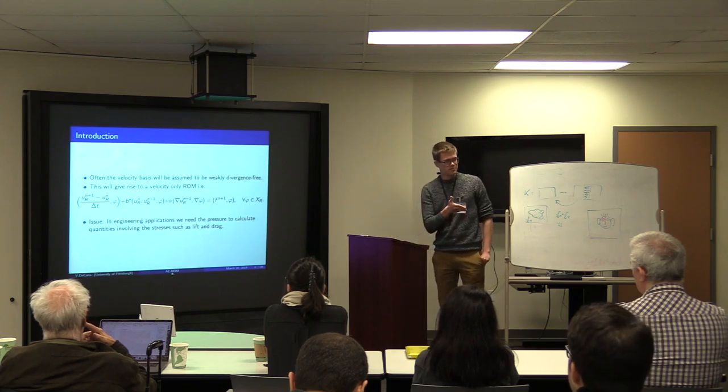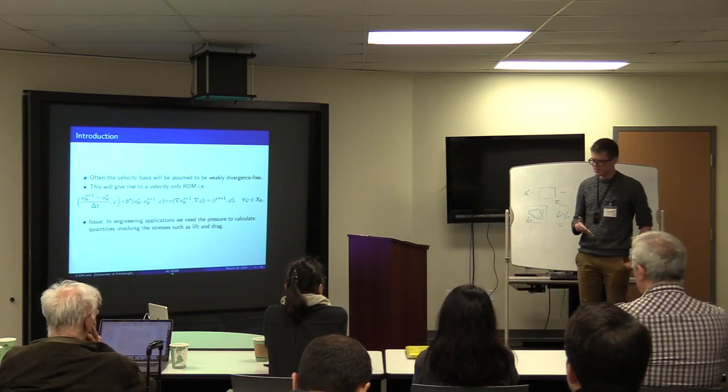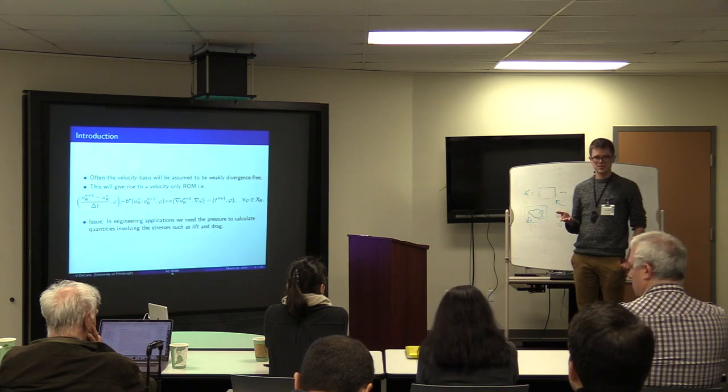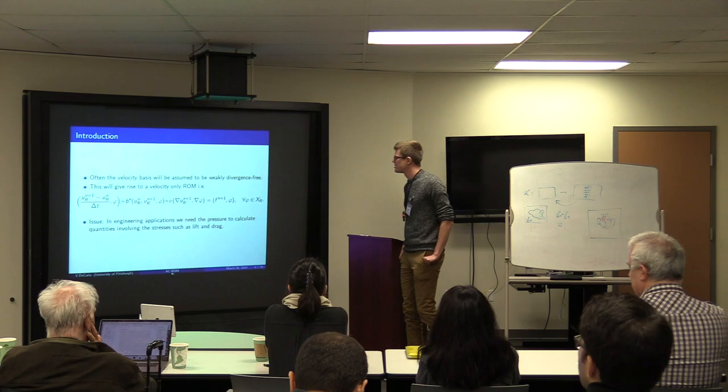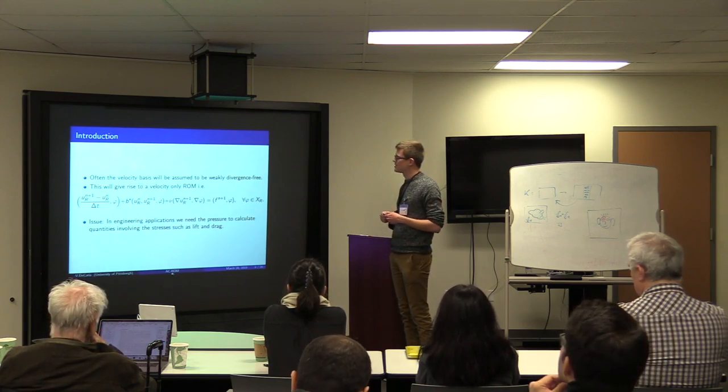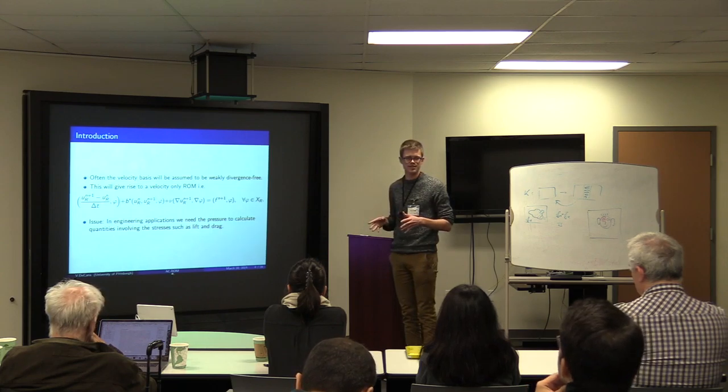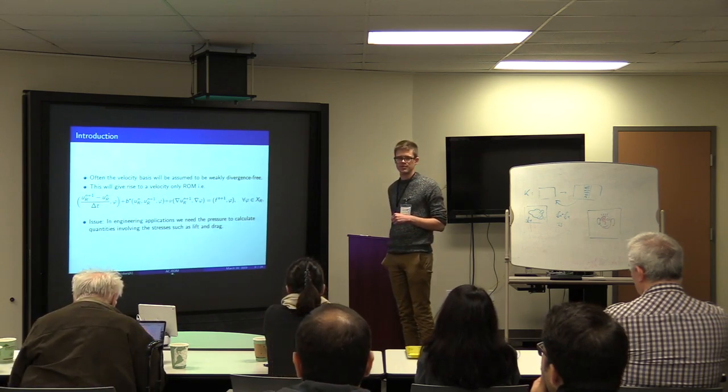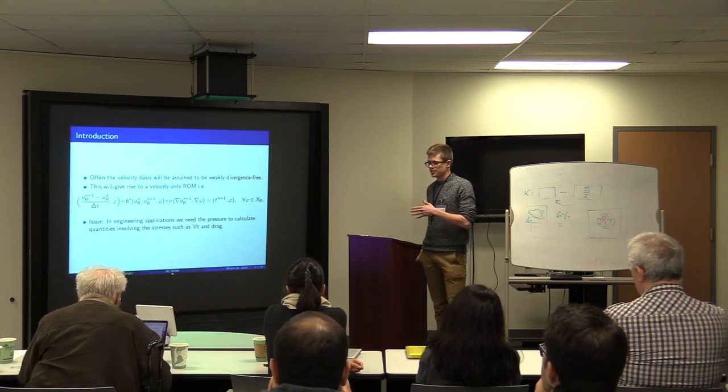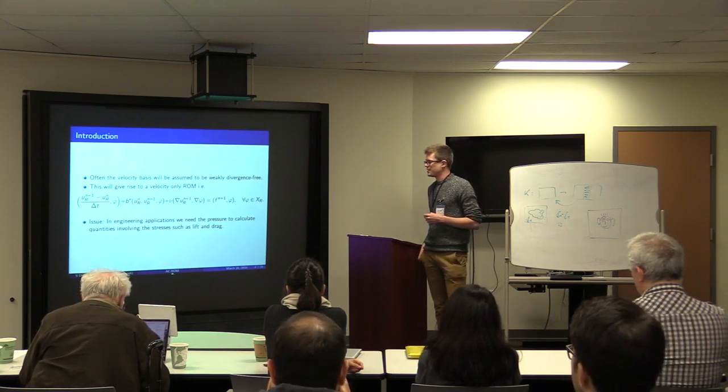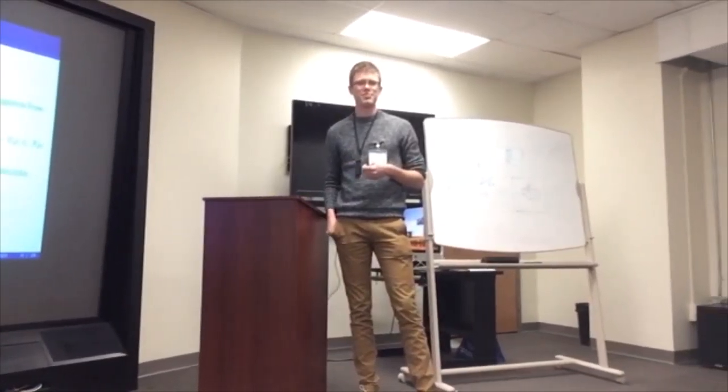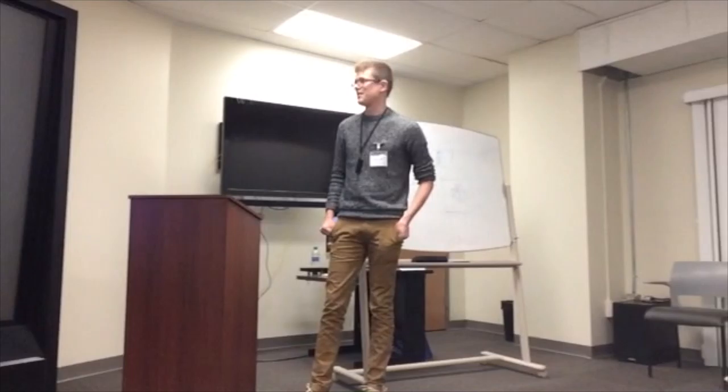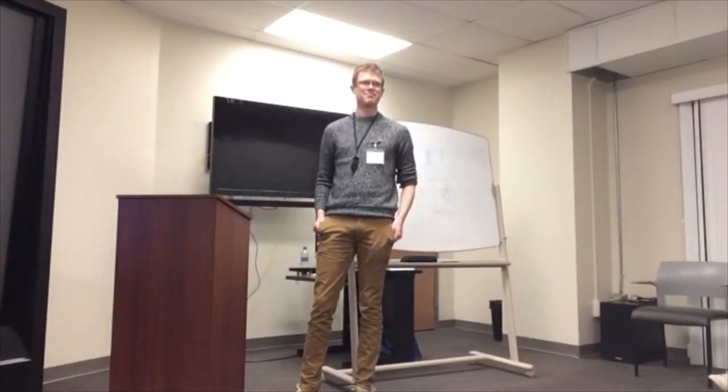So often these snapshots are constructed using a standard Galerkin method, then the results you get out are discretely divergence free. So that means when you construct the new Galerkin formulation with the ROM basis, the pressure just drops completely out of the momentum equation. So you end up just solving for velocity and then you have to recover pressure some other way.